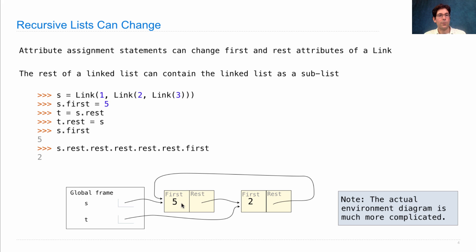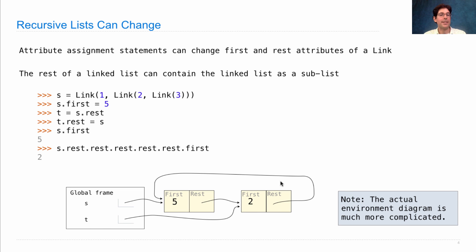And why is that? s was originally 1, 2, 3, and then it became 5, 2, 3. Then I bound t to the rest of that list, which was 2, 3. But then I changed the rest of t to be s, and that created a cycle.